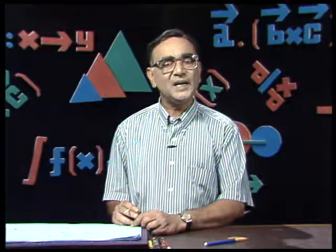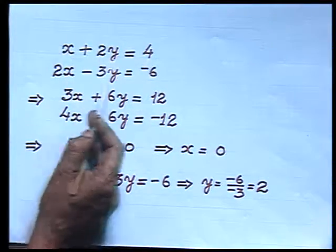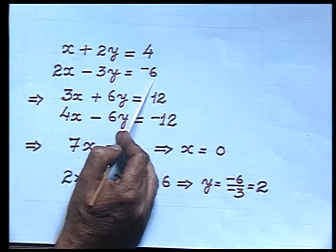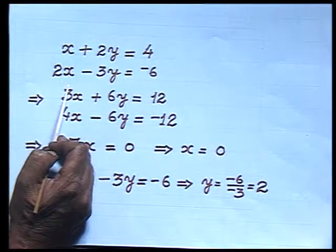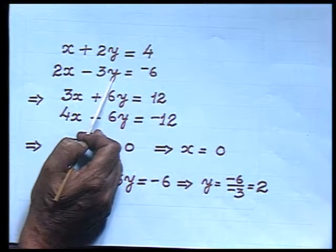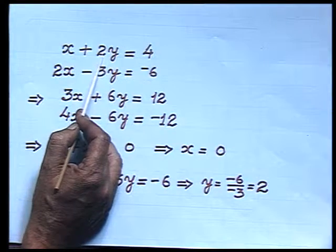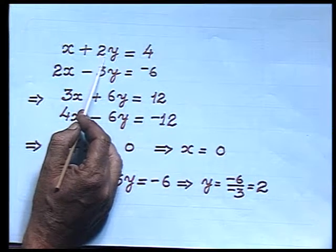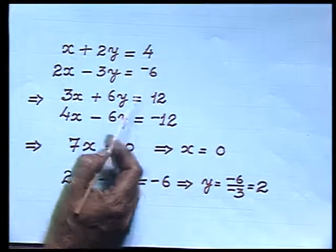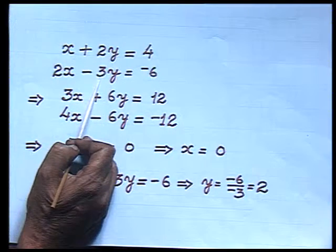Let us take another example. The equations are x plus 2y equals 4 and 2x minus 3y equals minus 6. Suppose I want to get the value of x — to do so I need to eliminate y. To get rid of y, I must make the coefficients of y the same in both equations. The coefficient of y is 2 in the first equation and minus 3 in the second.